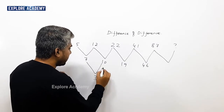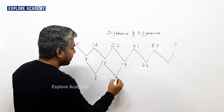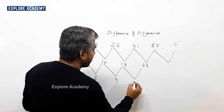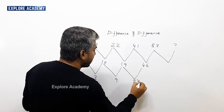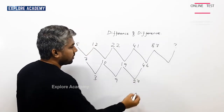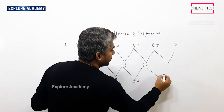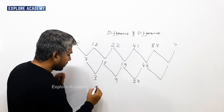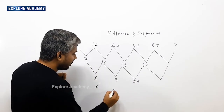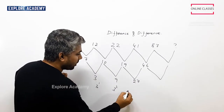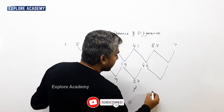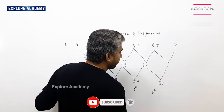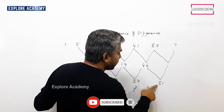3, 9, 27 — what is the difference of difference? Let's look at the logic. This is 3 power 1, 3 squared, 3 cubed, and 3 power 4 is 81.